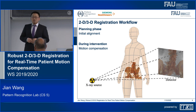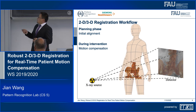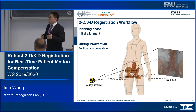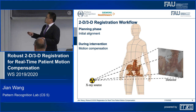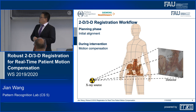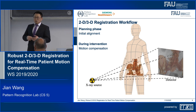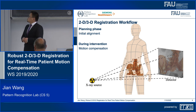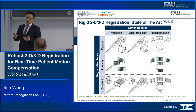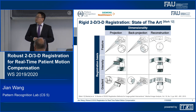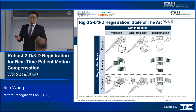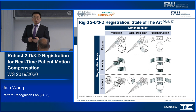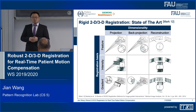Before the procedure, the images are well aligned. But during the procedure, if there's patient motion, it causes misalignment in the fused view. We need to apply a motion compensation to transform the 3D image accordingly, such that the fused view is again accurate. Of course, before I started to work on this topic, there was already a lot of work published in this field.